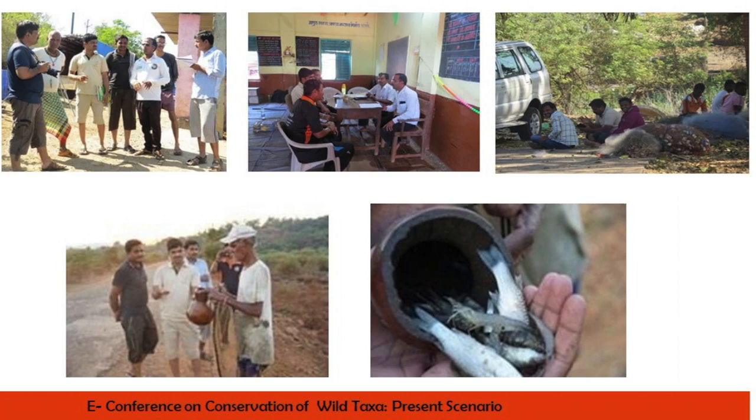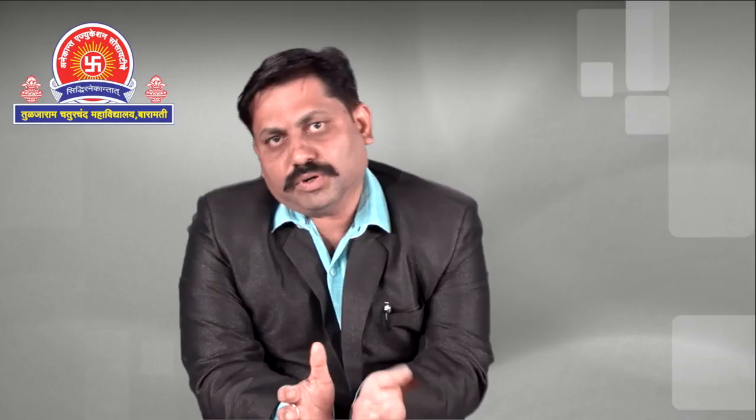We have had some interaction with local inhabitants who are totally dependent on mangroves and are on-site for protection of mangroves. Conservation is needed, and for that we need some strategies and policies to protect mangroves. We need micro-geographic surveys of creeks and estuaries for the Maharashtra coast — all sites are not yet surveyed. Detailed surveys will give us information about different species, their distribution, dominance, and the important roles played by mangroves.